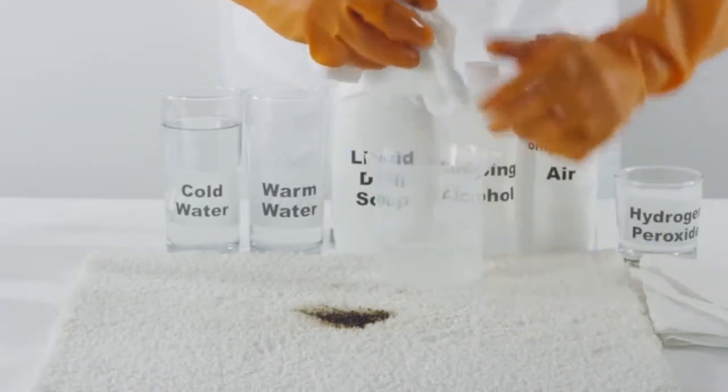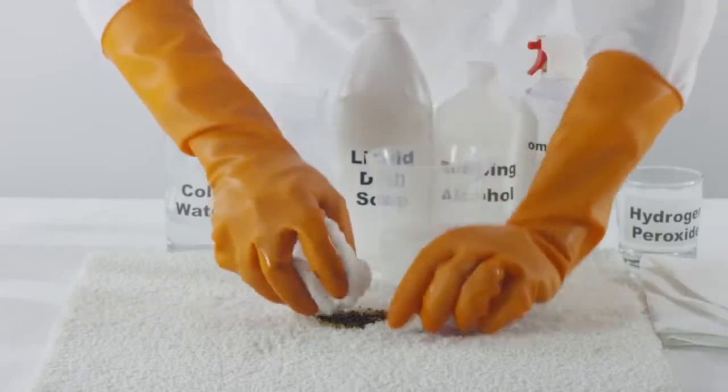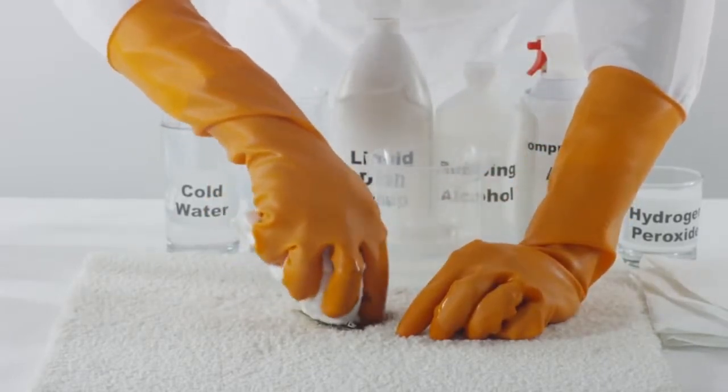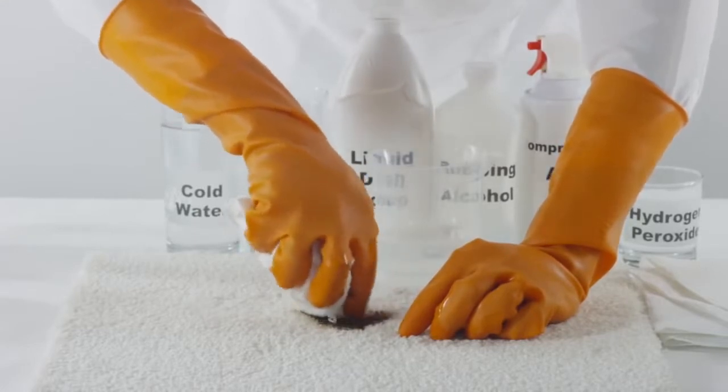Apply the cleaning solution directly to the tar stain, slowly working from the outside of the tar stain to the center, moving slowly inward so you don't spread the stain further onto the carpet.